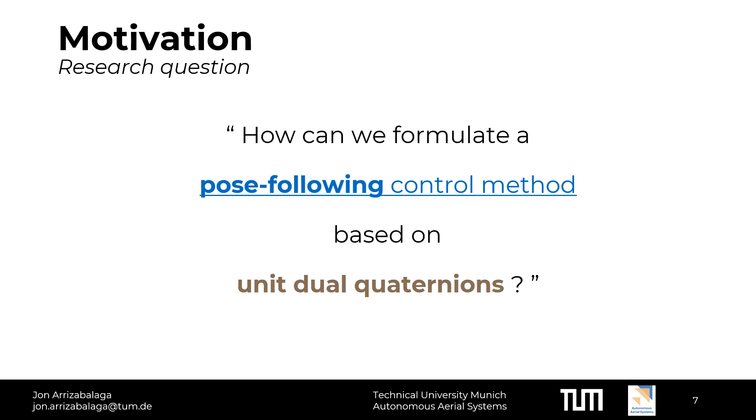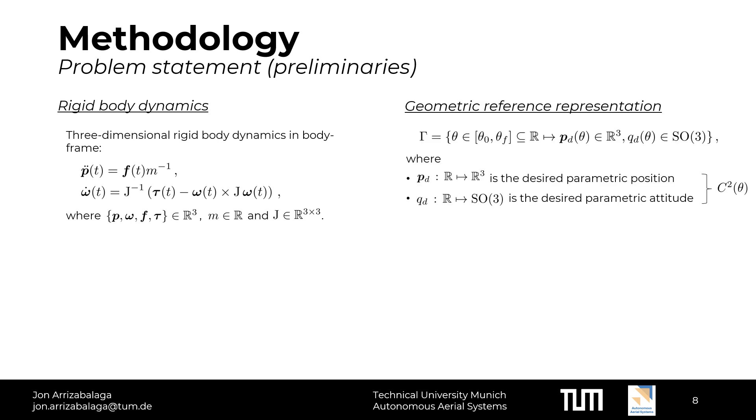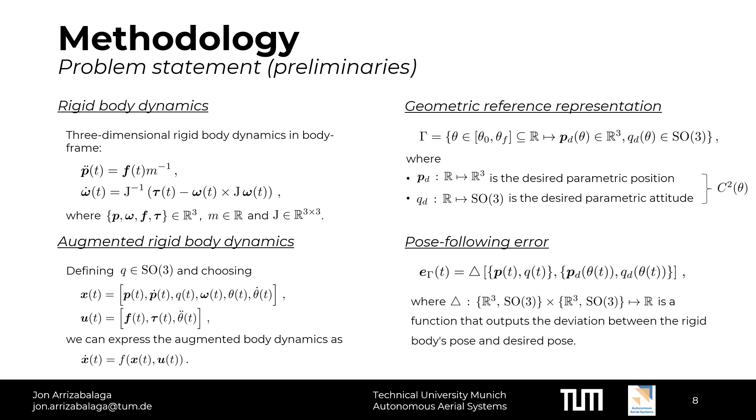This question naturally extends the concept of path following to pose-following. In the upcoming slides, we will reformulate this question into two different problems. Before doing so, there are some preliminaries that need to be covered. First, we consider that the system dynamics are given by the standard three-dimensional rigid body equations of motion. Second, we define the geometric reference denoted by gamma as a path with a moving frame attached to it. Both the Cartesian coordinates and the moving frame are given by two functions parametrized by theta. Third, we define the augmented rigid body dynamics by augmenting the system states by the parametric variable theta and its first derivative. In a similar way, the parametric variable's acceleration is added to the nominal control commands. Fourth, we define the pose-following error by a yet-to-be-defined function that outputs the deviation between the rigid body's pose and the desired pose. Due to the structure of SE3, this function is dependent on the control design approach and will be defined in the upcoming slides.